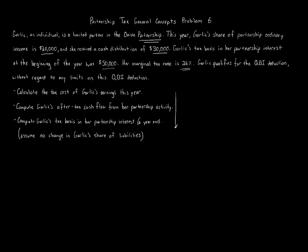Because this is a partnership and not a C corporation, the qualified business income deduction is very important. The QBI deduction relates to all entities with business activity other than C corporations — we have a partnership here so it applies. The partnership does not pay tax; it reports on Form 1065. The individual uses Form 1040. On the K-1, all of each partner's share of items of income, deduction, and loss get allocated to the respective owners through the Schedule K-1.